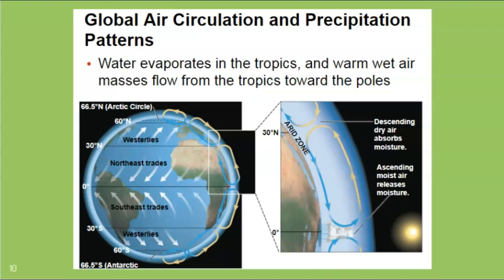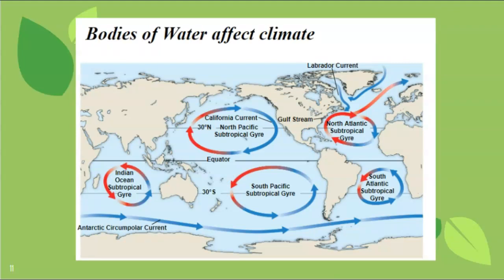Water currents also follow patterns from different parts of the world. Florida is a great vacation spot because its water comes from the Caribbean, so the ocean is nice to swim in. In contrast, California's water comes from Alaska, so people wear wetsuits in the ocean year-round — even in the middle of summer — because the water is cold due to that cold current coming in from Alaska.